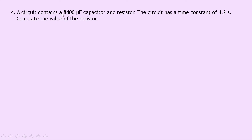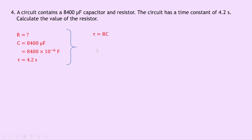Question 4: a circuit contains an 8400 microfarad capacitor with a time constant of 4.2 seconds. Calculate the resistance. C = 8400 × 10⁻⁶ F, τ = 4.2 s. Using τ = RC, rearranging gives R = τ / C = 4.2 / (8400 × 10⁻⁶), which gives a final answer of 500 ohms.